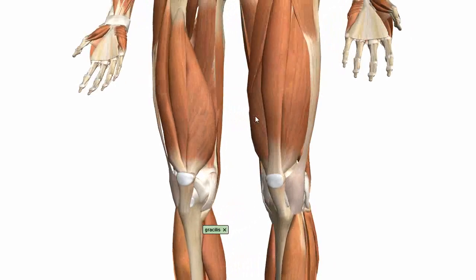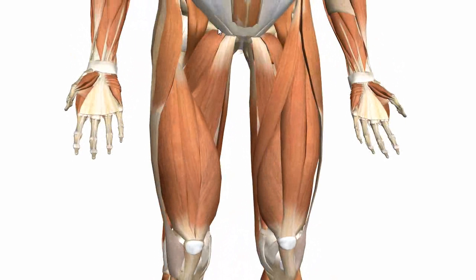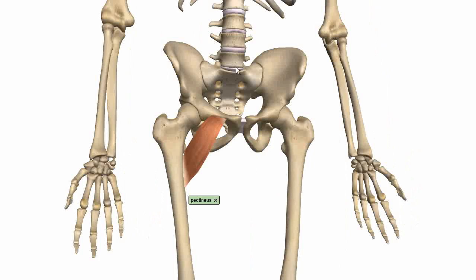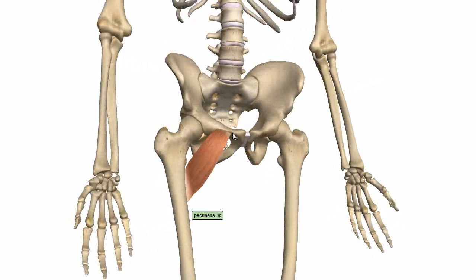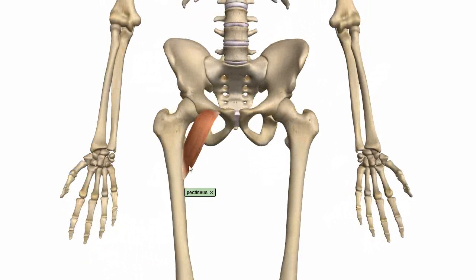Next we have the pectinaeus muscle — a rectangular-shaped muscle innervated by the femoral nerve rather than the obturator nerve. It originates on the pectineal line and inserts onto the femur. This muscle adducts and flexes the thigh at the hip joint.